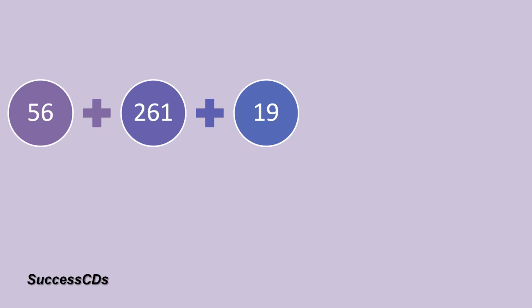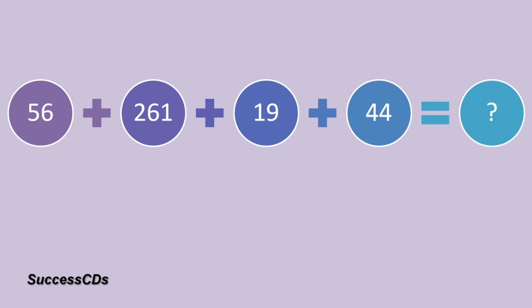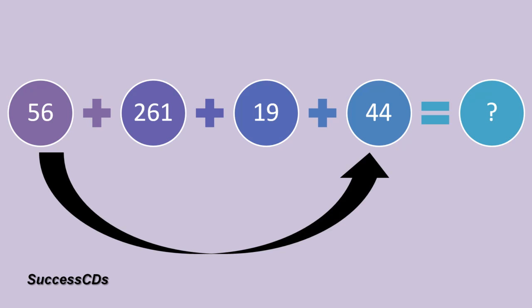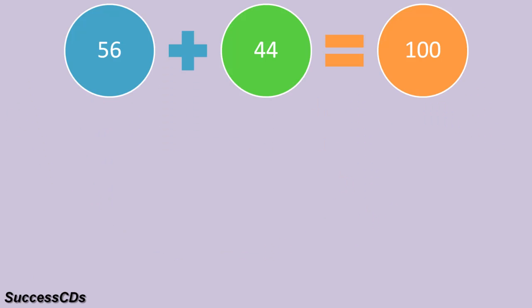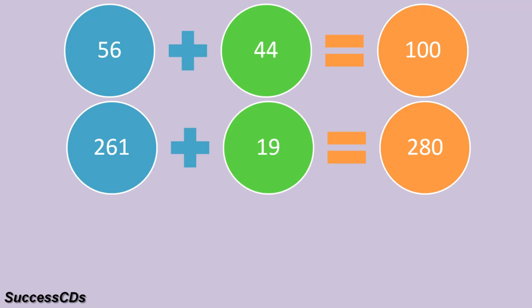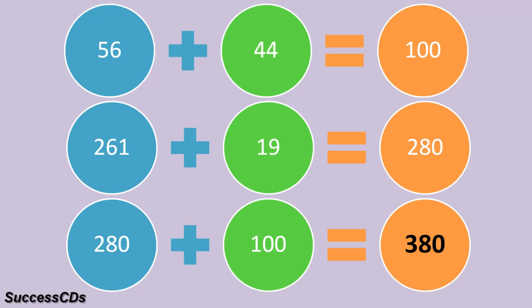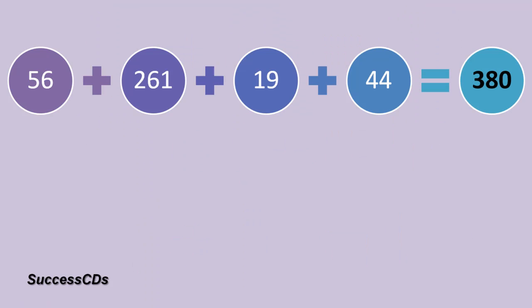Another example: 56 plus 261 plus 19 plus 44. Here again, make pairs that give 0 in the ones place. The pairs are 56 and 44, and 261 and 19. When you add 56 and 44 you get 100. 261 plus 19 gives you 280. Now you add both sums: 280 plus 100 gives you 380 as the answer.